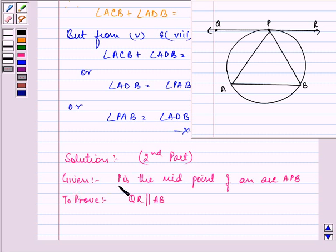Here, we are given that P is the midpoint of arc APB. And we need to prove that QR is parallel to AB. Now, let us, for our convenience, name these four angles. This will be angle 1, 2, 3 and 4. So, now, let's begin with our proof.